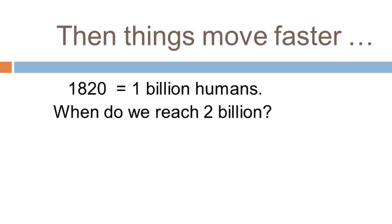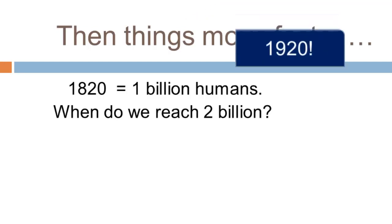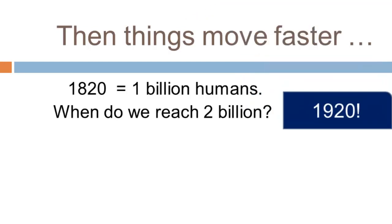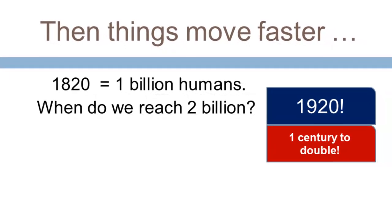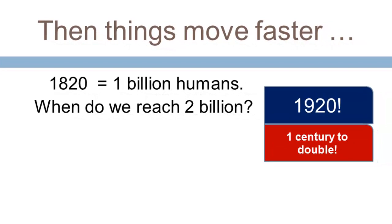Starting at one billion in 1820, when do we reach two billion? It turns out it's right around 1920 — roughly one century to double. We've gone from taking five centuries to go from half a billion to a billion, to just one century to go from one billion to two billion. This resembles our simple model.